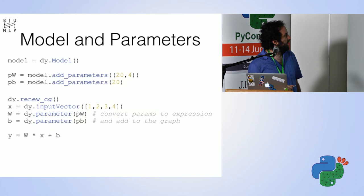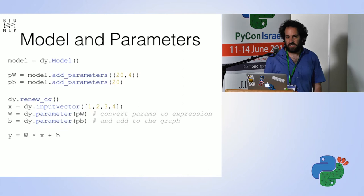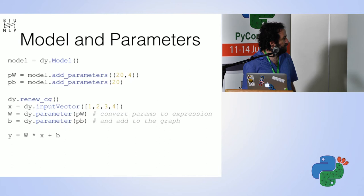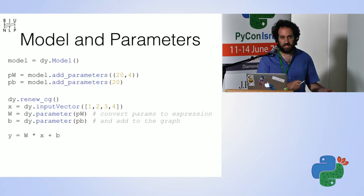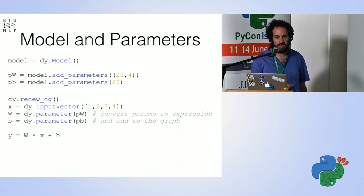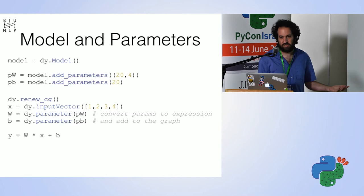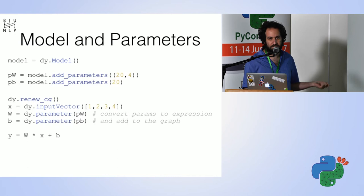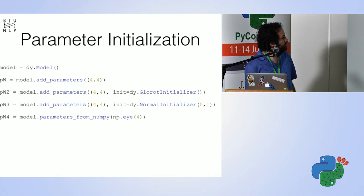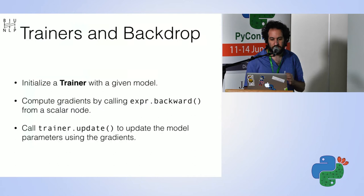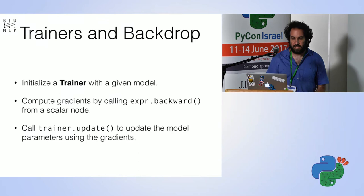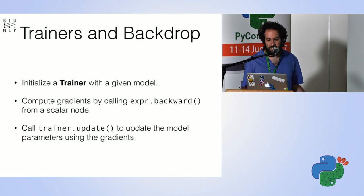To use parameters: create a model, then add parameters to the model — here we have a 20x4 matrix and a 20-dimensional vector as pw and pb. Then create a new graph, have an input vector, and create parameter expressions by adding these parameters to the graph. Now x, w, and b are all expression objects that we can combine to compute y, which is also an expression. You can add parameters with different initializations.